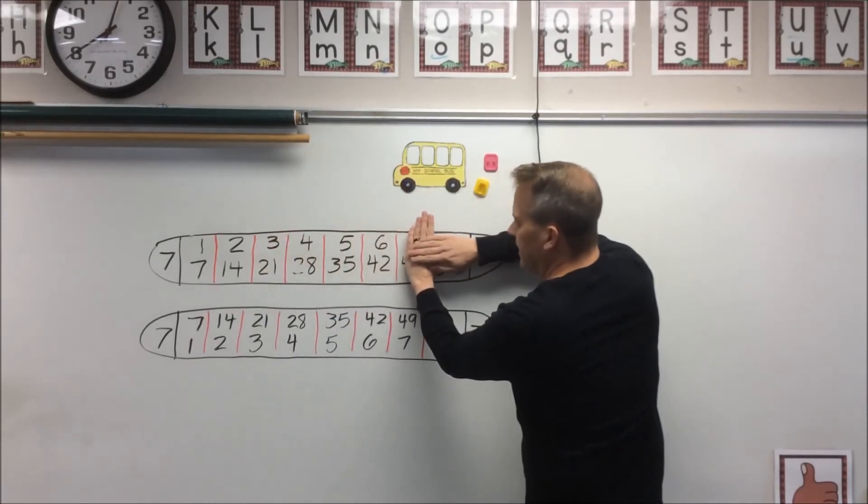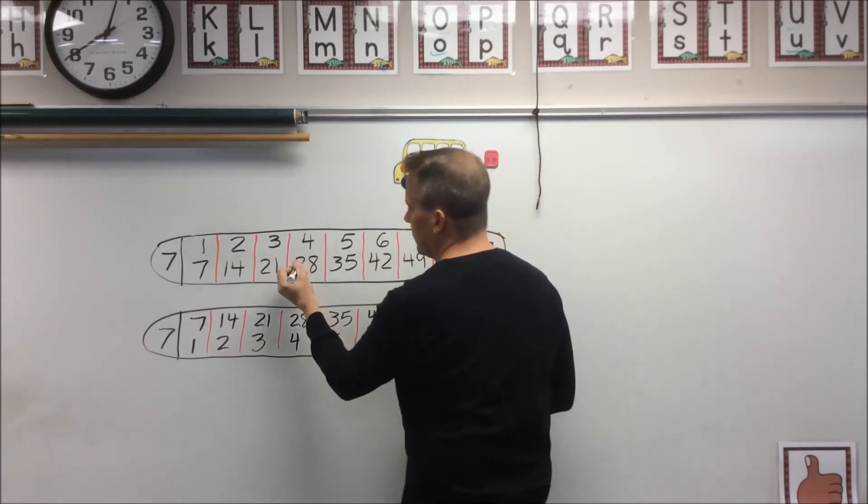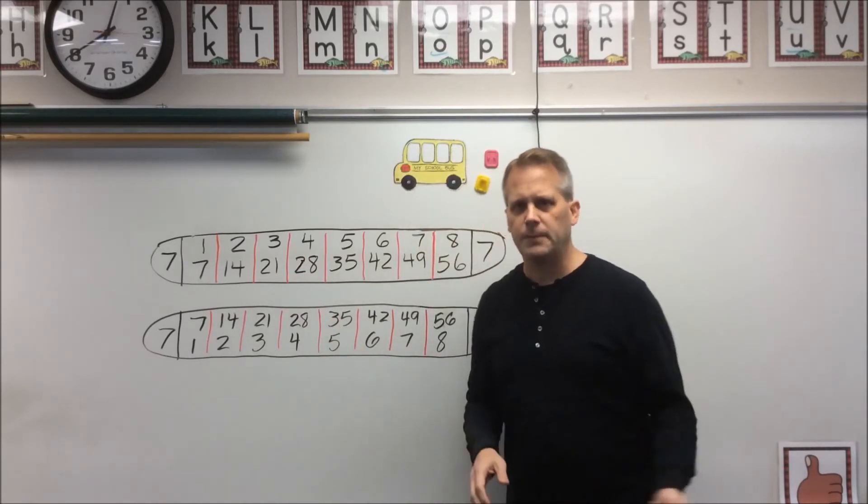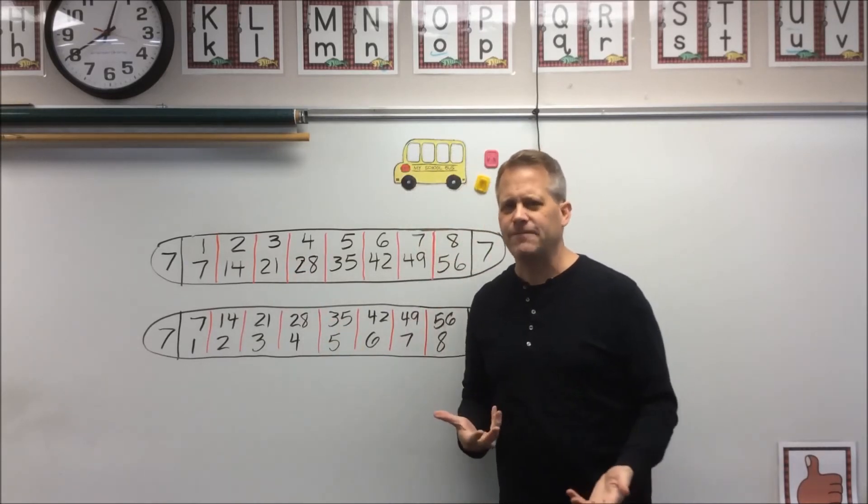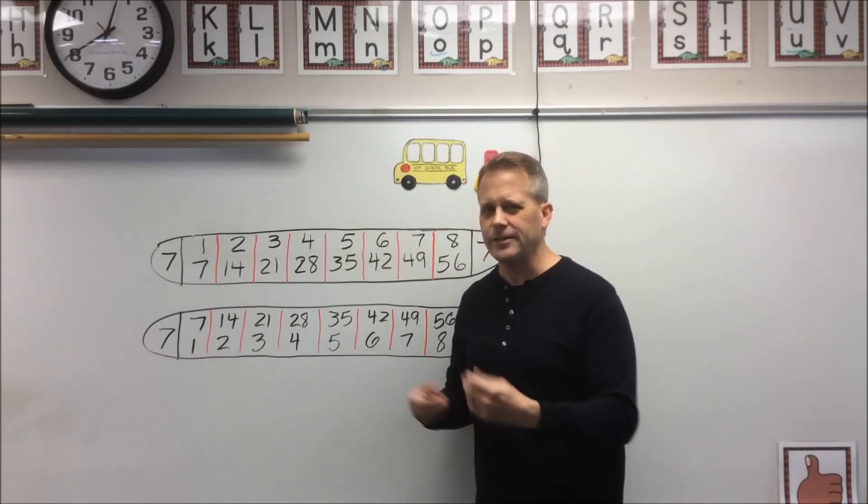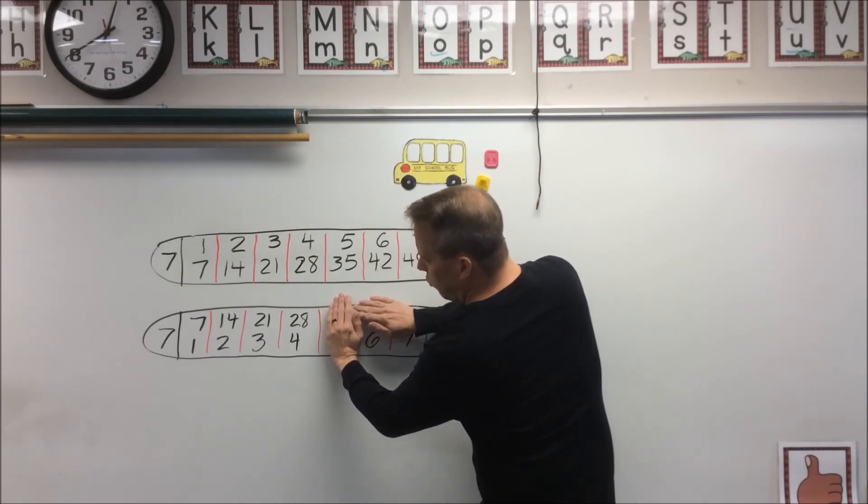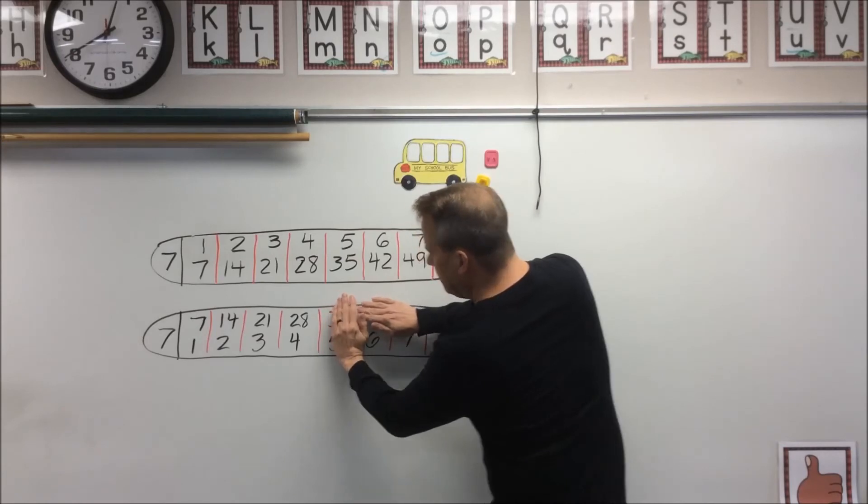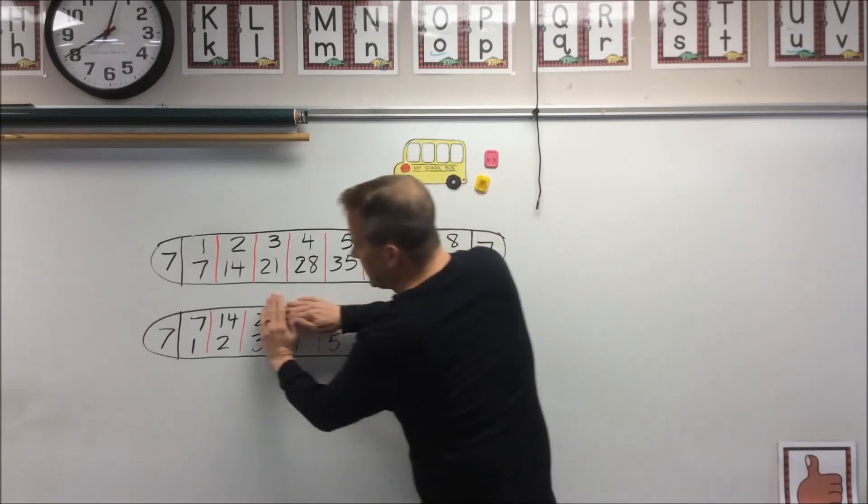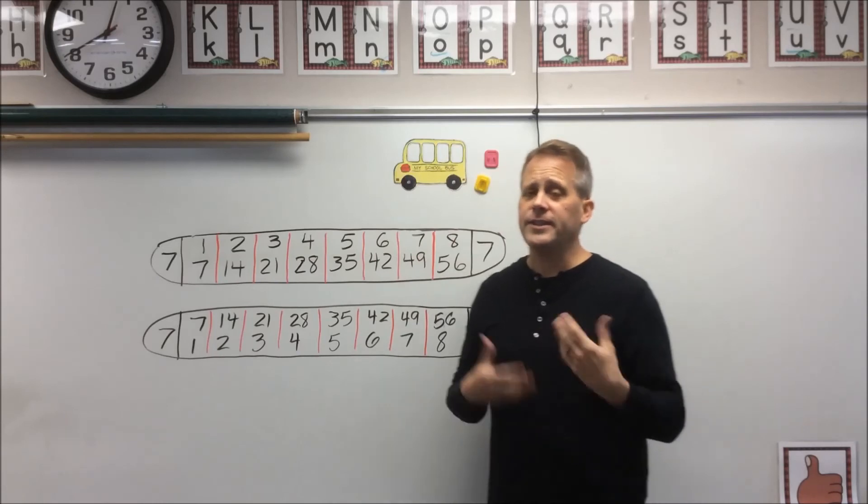Maybe I was working on division facts and I had to do the same thing. So maybe I got a worksheet from my teacher and it was all about division and I saw all of these sevens and I'm not really good at sevens, so I pulled out my popsicle stick and I saw 28 divided by seven, or I saw 49 divided by seven, or if I saw 14 divided by seven.